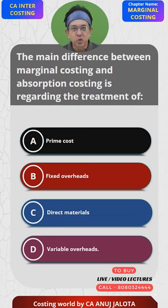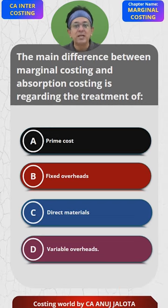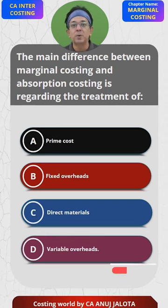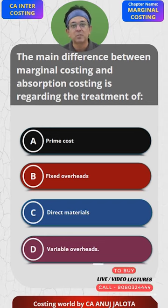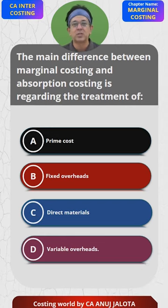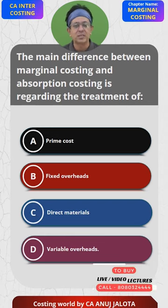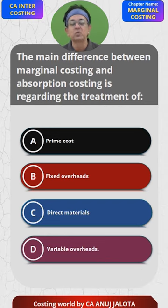Absorption Costing and Marginal Costing only differ in how the treatment of fixed overheads changes. Absorption Costing says we will convert fixed overheads into a per unit cost by converting it into an absorption rate — that is budgeted overheads upon budgeted level of activity. But Marginal Costing says the true nature of any fixed overhead is nothing but a period cost, so let it remain as a period cost.